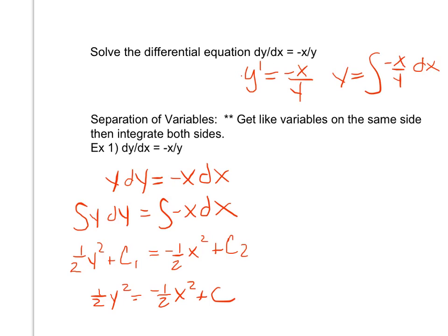Typically we want to get y by itself, just like the previous example where my general solution had y by itself. I'm going to multiply both sides by 2, giving me y squared equals negative x squared plus c. Notice that regardless of what I'm doing to manipulate my equation, it's not really affecting c.